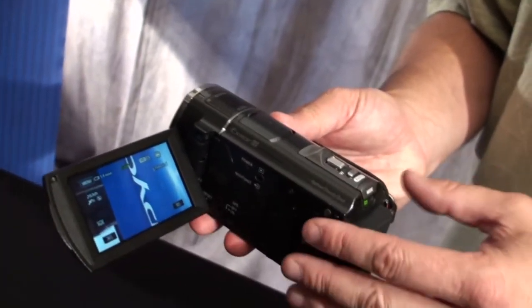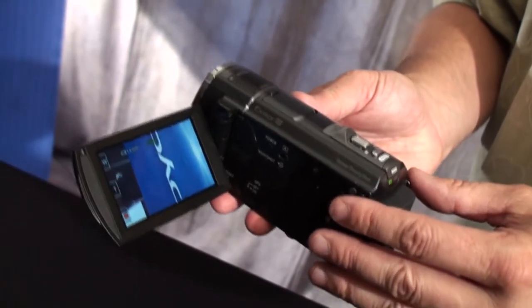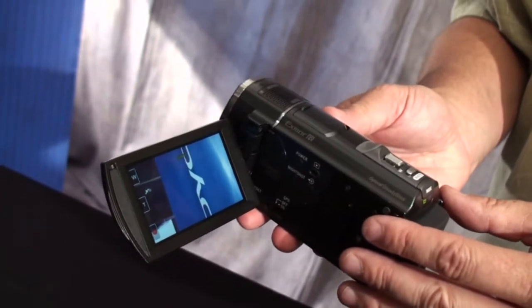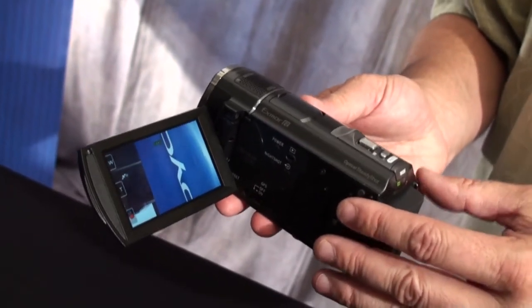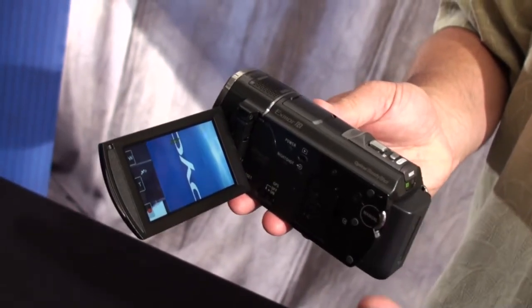We have things like the image stabilizer that's improved. Our image stabilizer before was good for up and down and left to right. Now we've actually added a little bit of roll in there as well. So even if you're shooting in a car or you're on a tour or on holiday, you're going to get nice stable images.